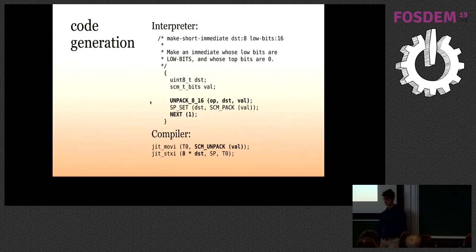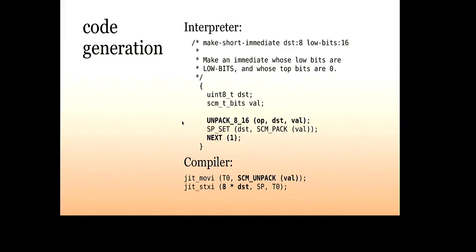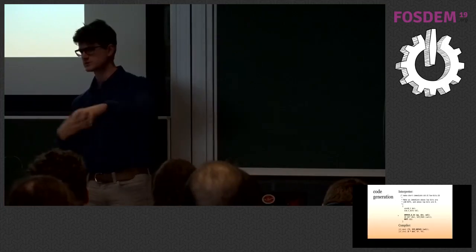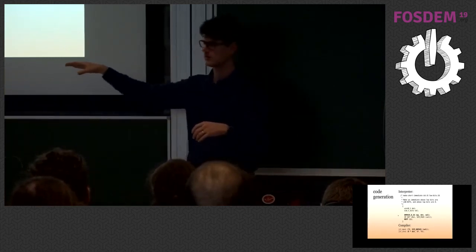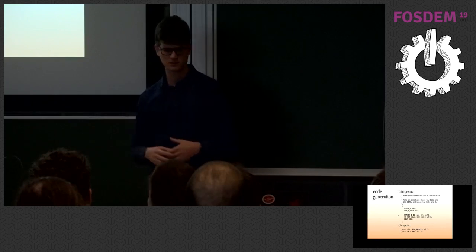We use GNU Lightning, a project that exposes an API — when you call JIT_MOVI it emits corresponding machine code to load an immediate into a register. It has backends for every architecture in use today. The native code GUILE emits does the corresponding operations on the GUILE stack that the interpreter would. Every instruction loads operands from memory and writes results back to corresponding stack slots. There's no register allocation yet — that's a necessary next step. But because there's a correspondence between every interpreted and JIT instruction, you can switch between the two at any time.